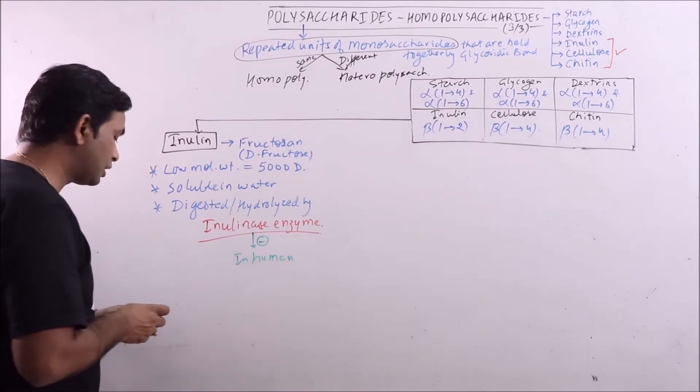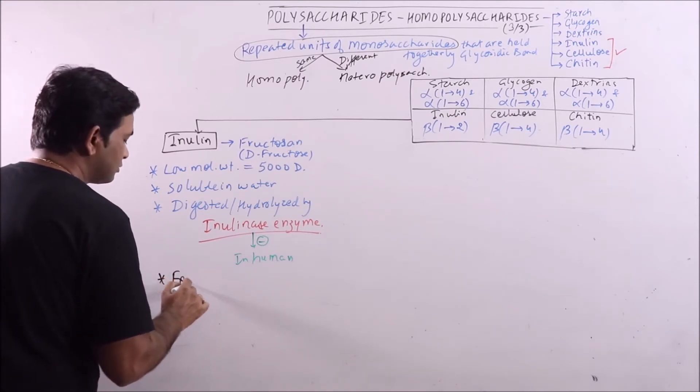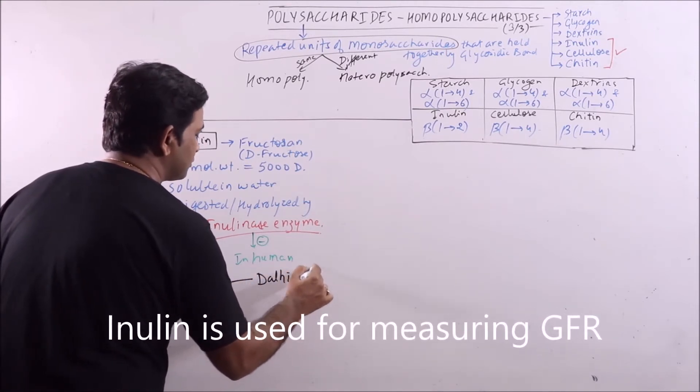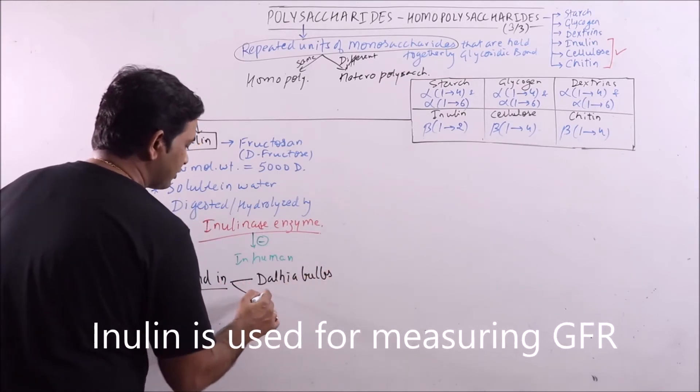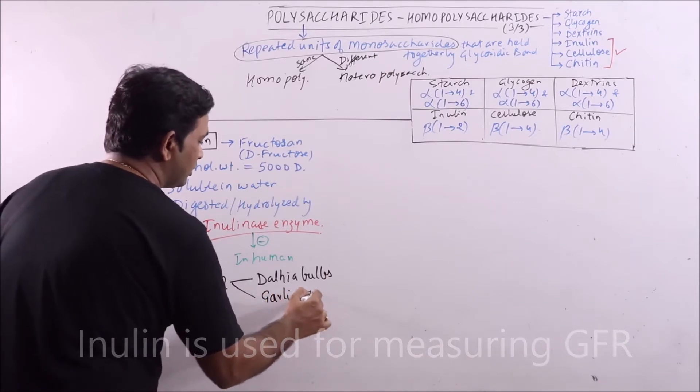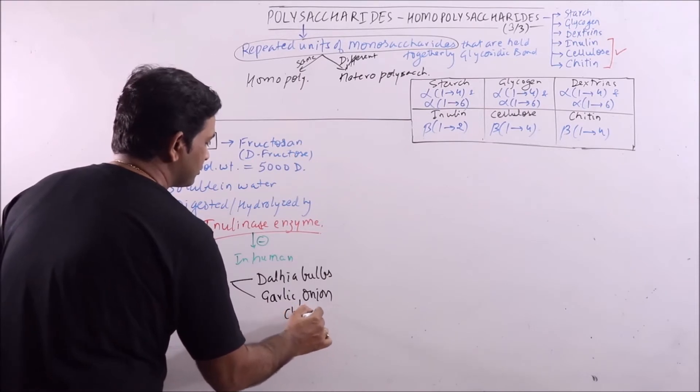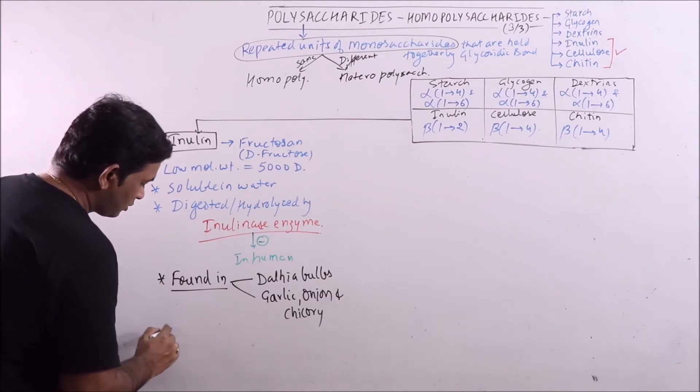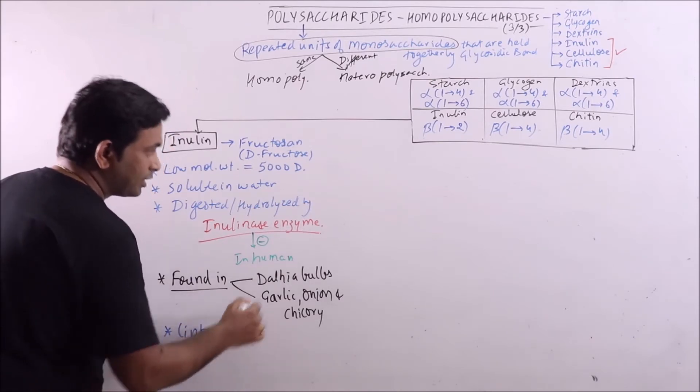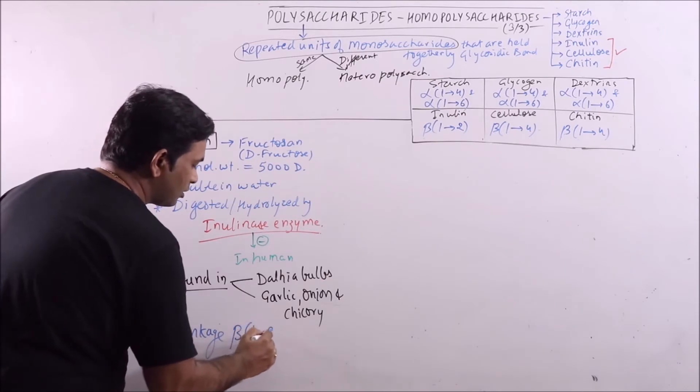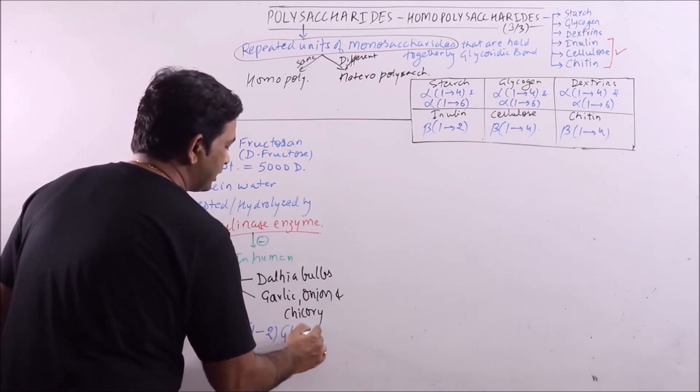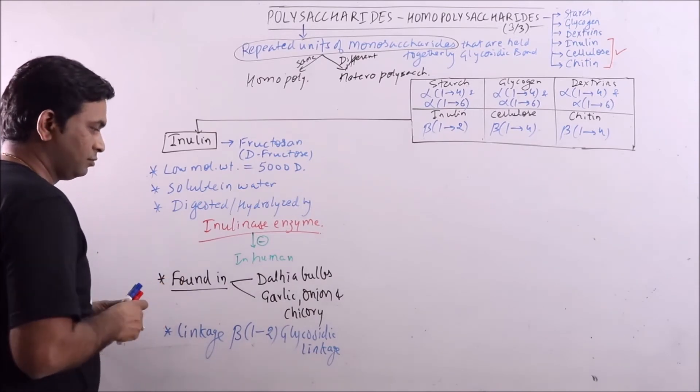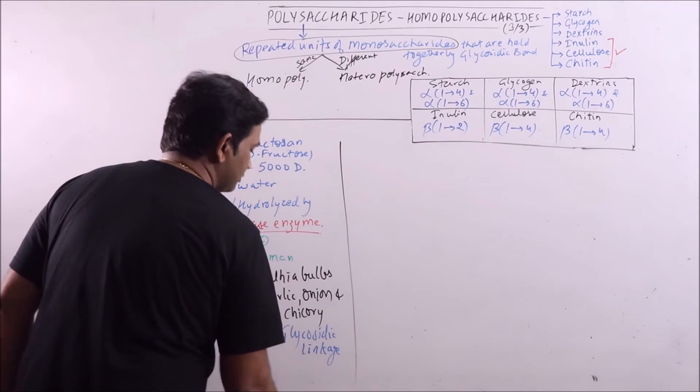That is why it is not the part of our diet. Inulin is found in dahlia bulbs and GOC—garlic, onion, and chicory. The linkage between the D-fructose units is beta-1,2 glycosidic linkage, beta-D-fructose.